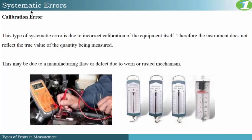Our second type of systematic error is called calibration error. This type of systematic error is due to incorrect calibration of the equipment itself; therefore the instrument does not reflect the true value of the quantity being measured. Calibration error may be due to a manufacturing flaw from the factory, or defects from being worn or rusted over a number of years. For example, if we take a spring balance — over years the spring could become rusted, affecting the integrity of the spring and meaning the scale would no longer reflect the true value, causing calibration error.